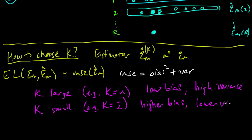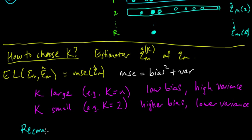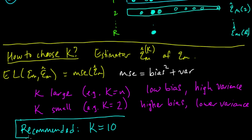And when k is small, it's also going to have lower variance. So people have done lots of experiments and theory about k-fold cross-validation, and the common wisdom is that a good balance between bias and variance gives a recommended value of k equals 10. This is sort of the standard choice. Sometimes people use 5, but 5 or 10 — with 10 being the recommended number.